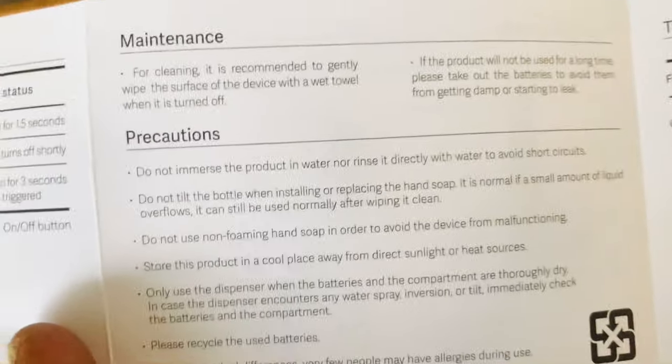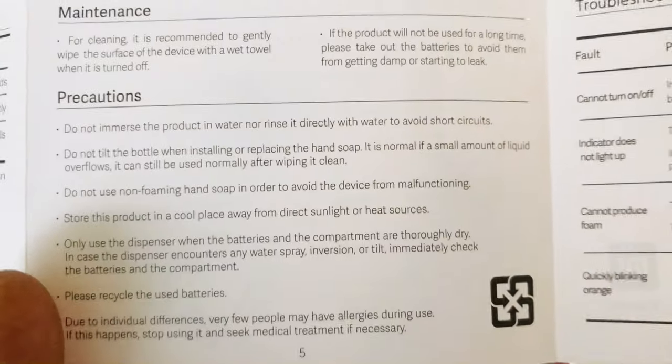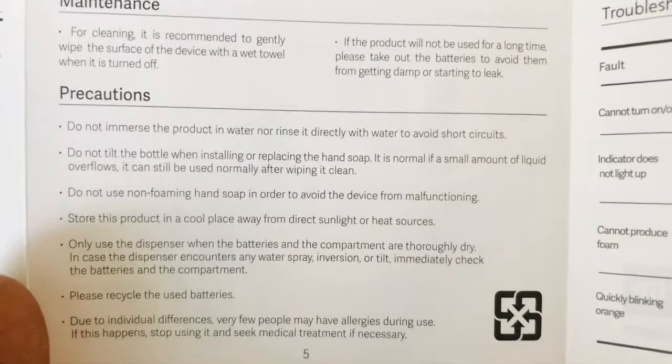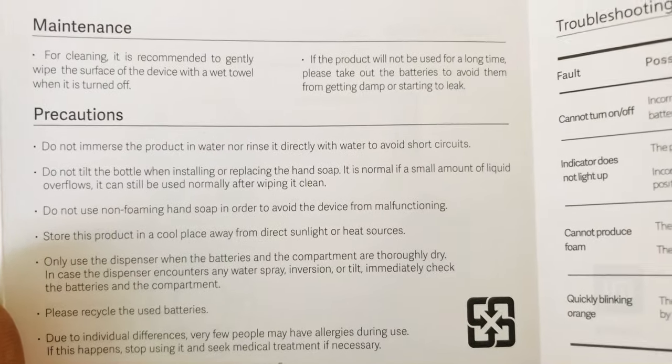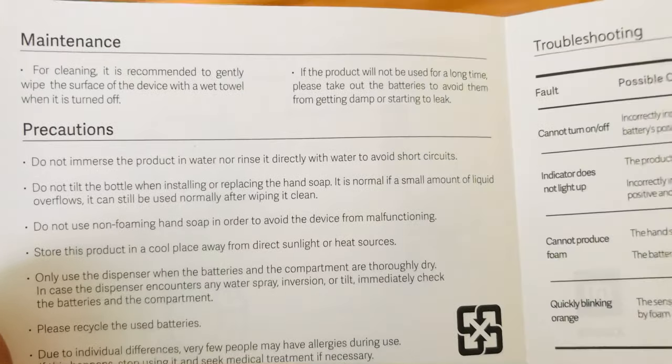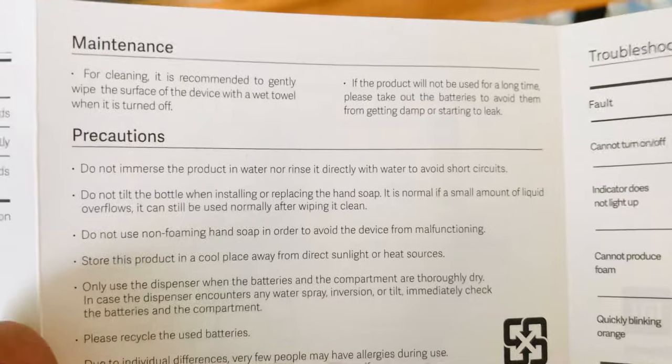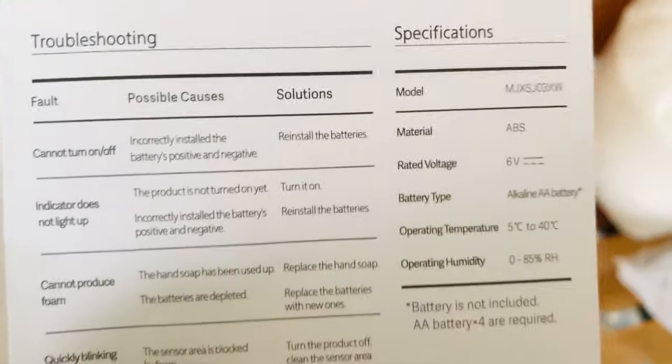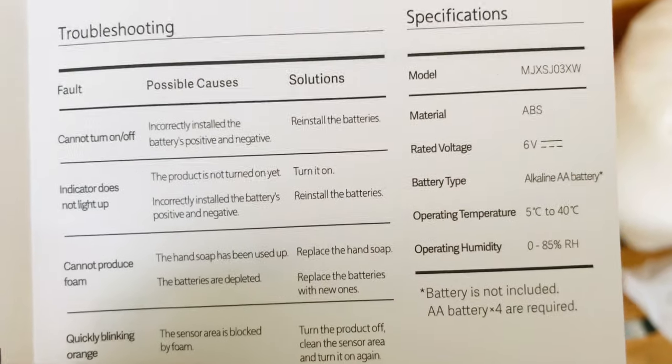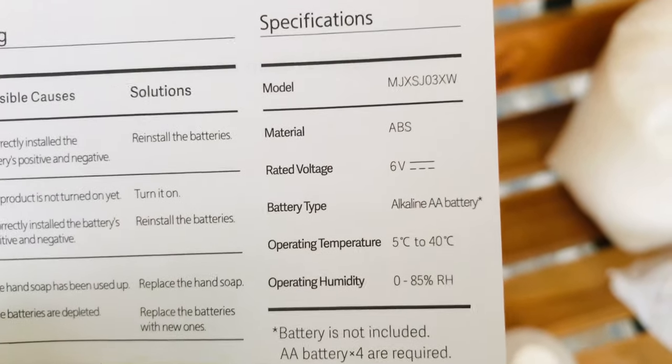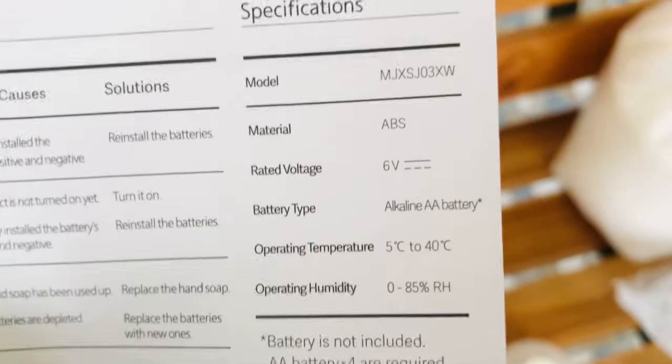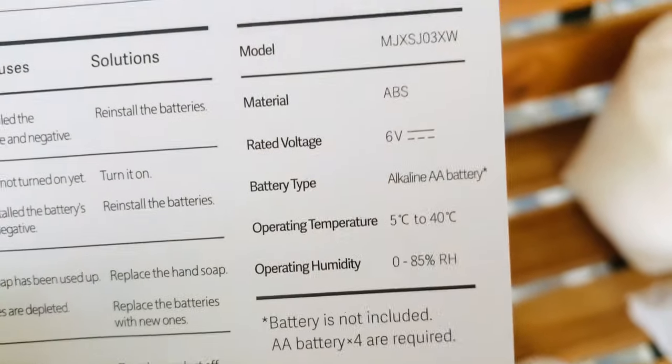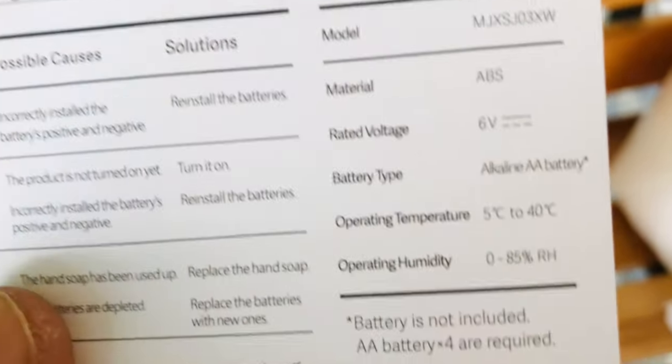Precautions: do not immerse the product in water or rinse it directly with water - avoid short circuits as it can be harmful. The troubleshooting guide covers many techniques. Use double-A batteries, not triple-A. Maintain temperature between 5 to 40 degrees Celsius - don't place in very cold or hot places. The material is ABS.